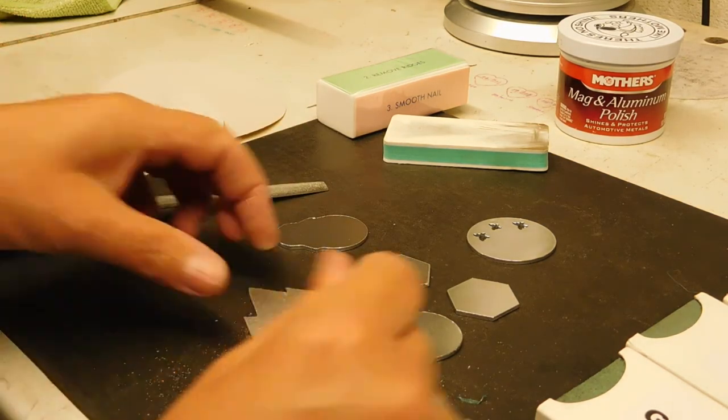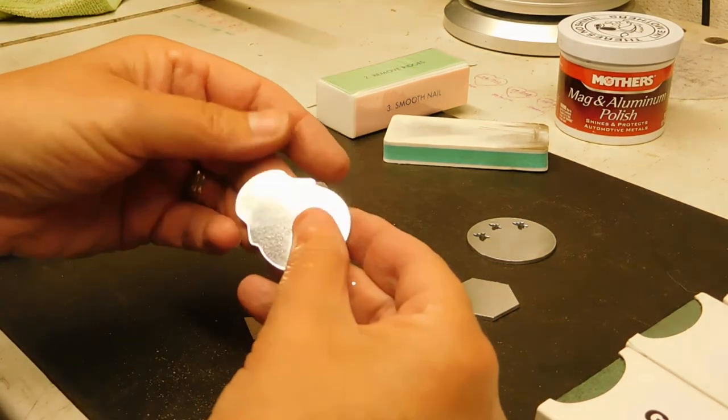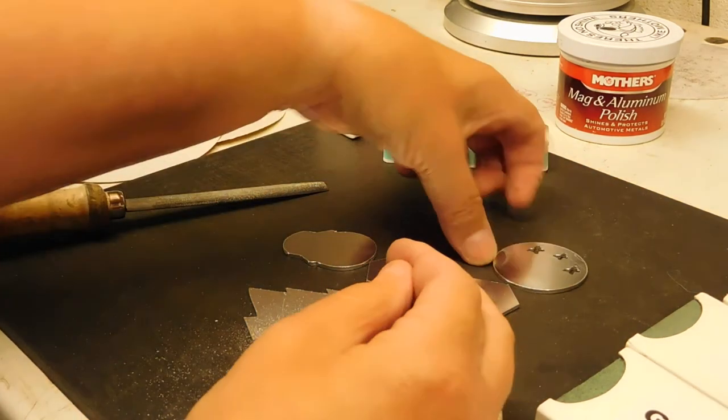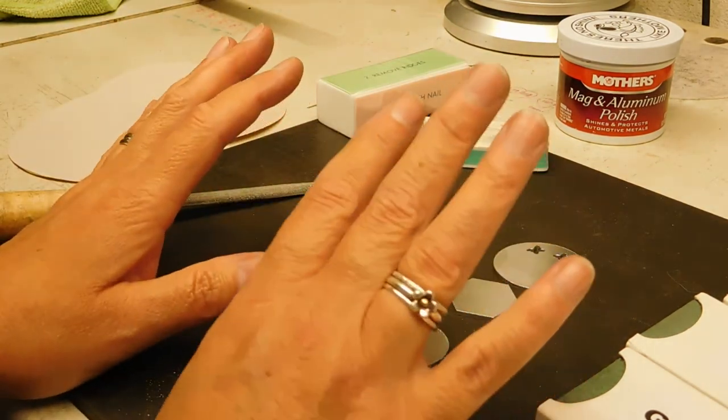So those are just some little basics of tidying your blanks up ready for selling. The next one I'm going to move on to is sanding.